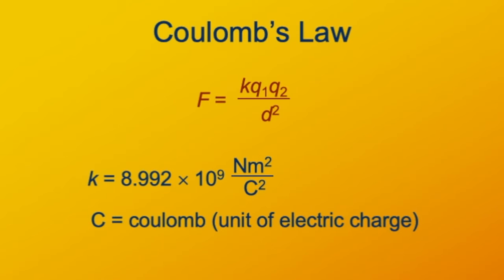D is the distance between objects one and two. This formula specifically works for point masses, where objects one and two are points and Q1 and Q2 are their charges. K has to have the right units to give us a force in newtons — charge squared in the denominator (those are Coulombs) and distance squared in the numerator (meters squared). C is the Coulomb, the SI unit of electric charge. For context, the charge of a proton is 1.6 times 10 to the minus 19 Coulombs.